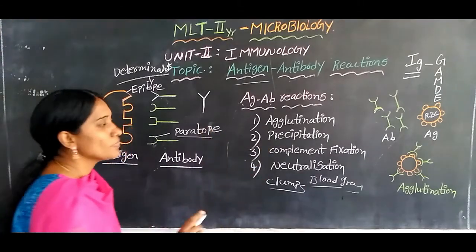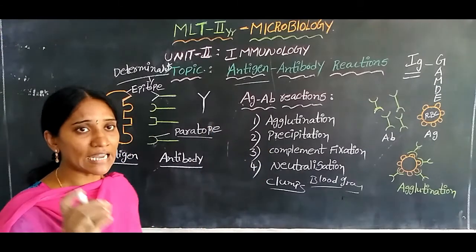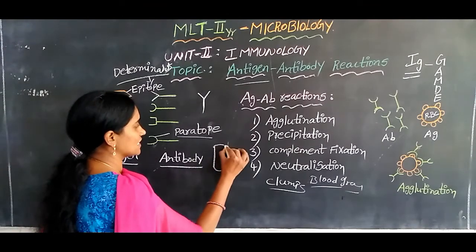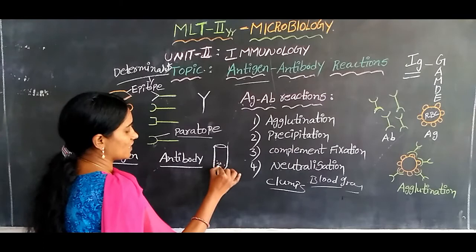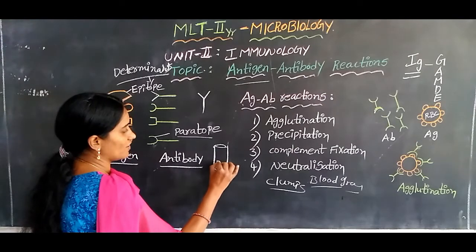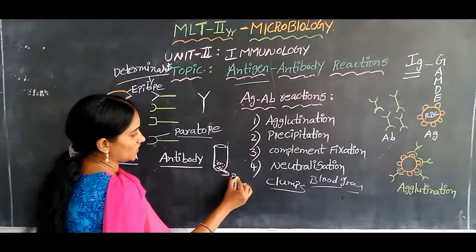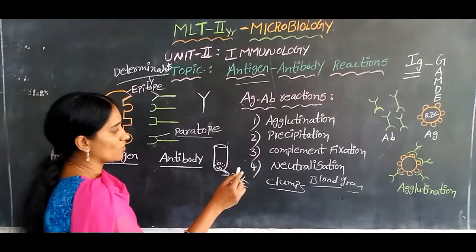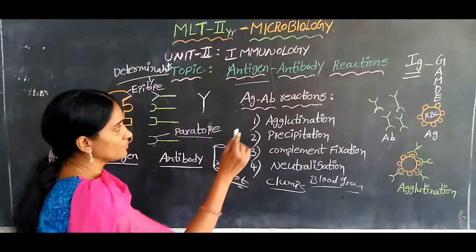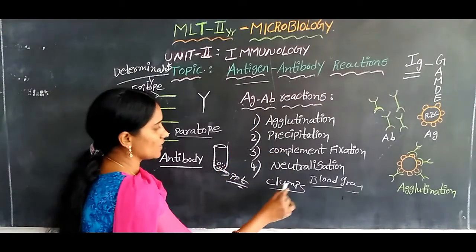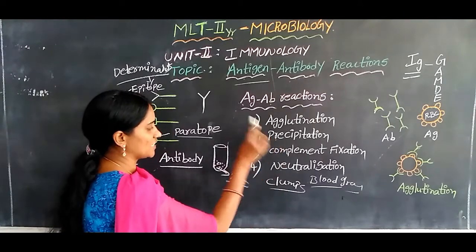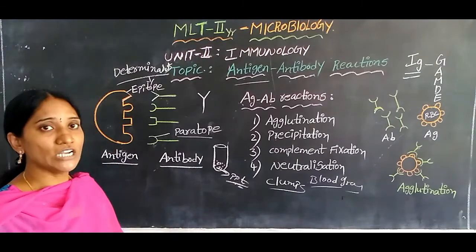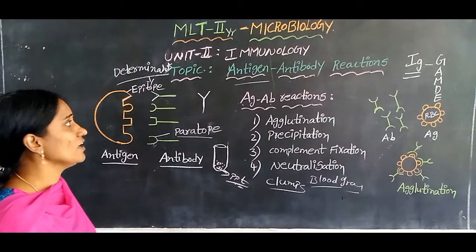Precipitation means antigen-antibody combine to form a precipitate, which can be observed in test tubes. In agglutination they form clumps; in precipitation they form a precipitate. These are the agglutination and precipitation reactions.